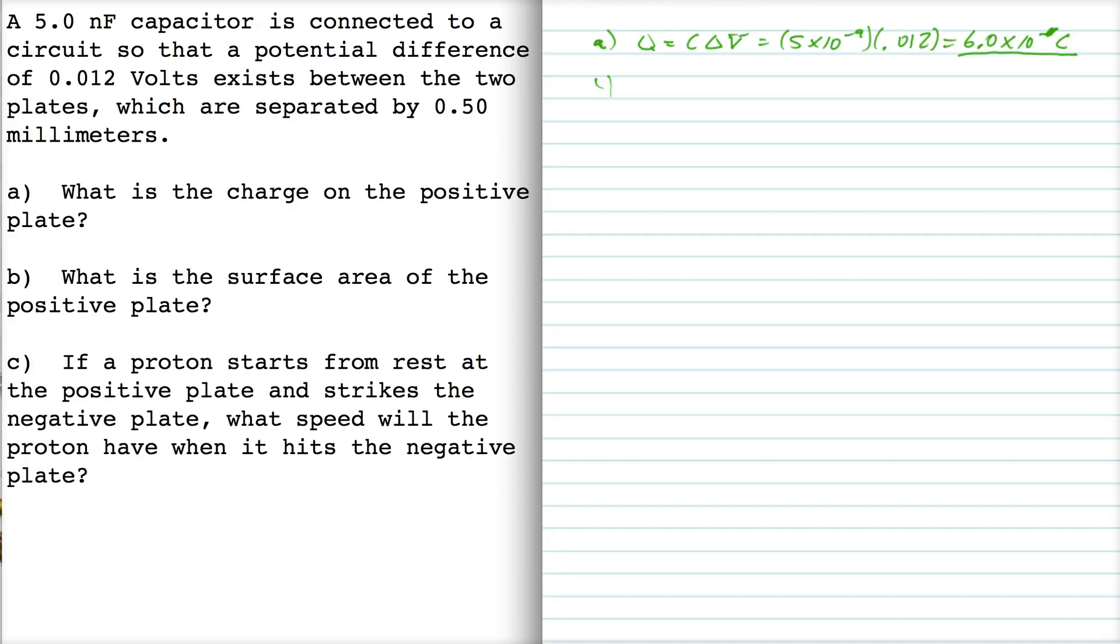For part B, as for the surface area of the positive plate, well, the equation for the capacitance is that C is equal to that area over 4 pi kd, right.